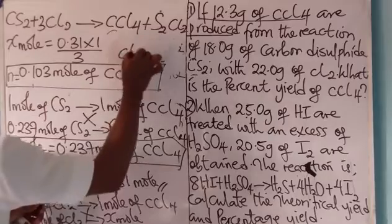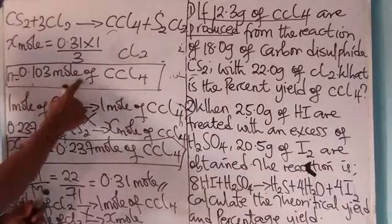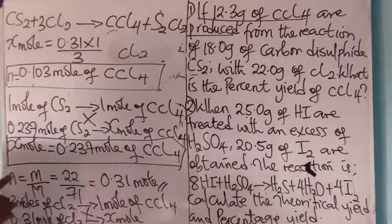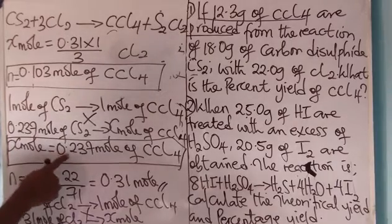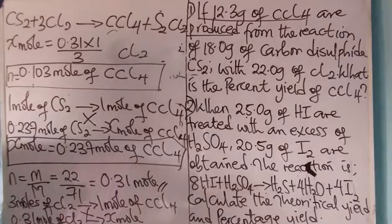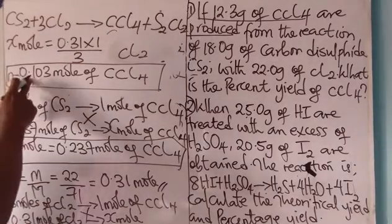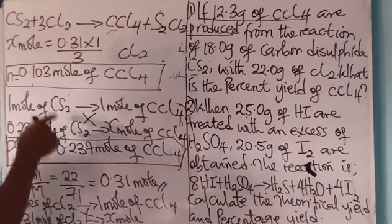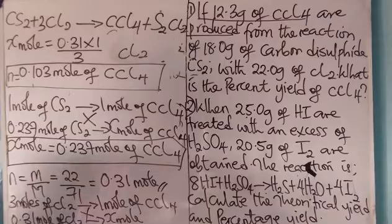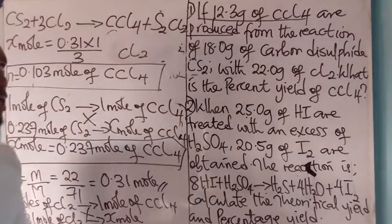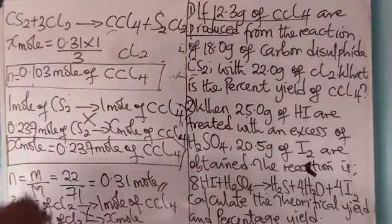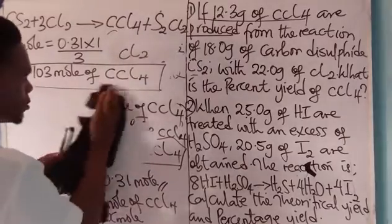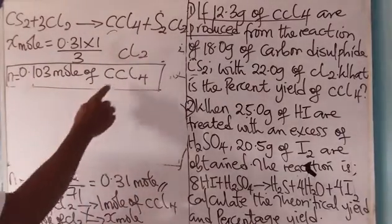So chlorine gives 0.103 mol of CCl4, and carbon disulfide gives 0.237 mol of CCl4. Since 0.103 is smaller than 0.237, chlorine is the limiting reagent and carbon disulfide is the excess reagent. The question asks for percentage yield, so we use the limiting reagent's result to find the theoretical yield.